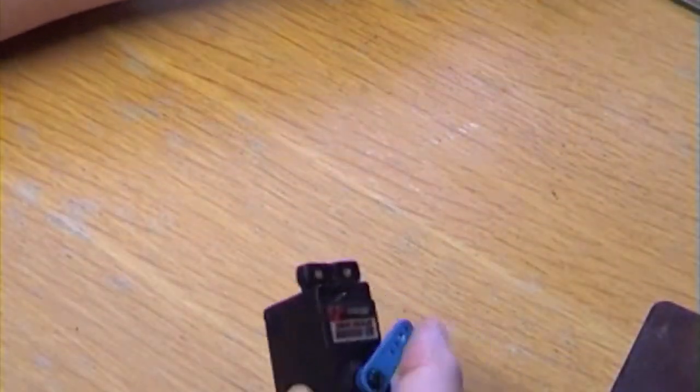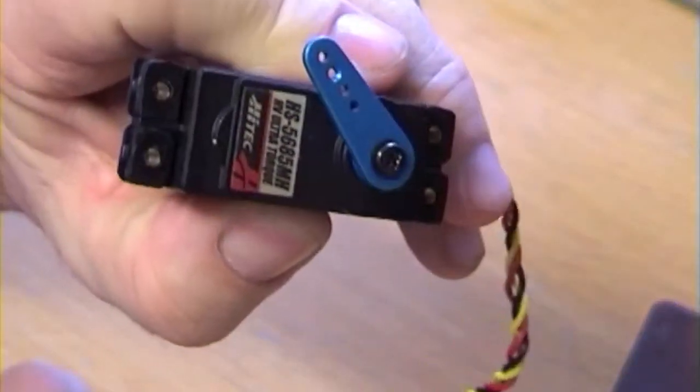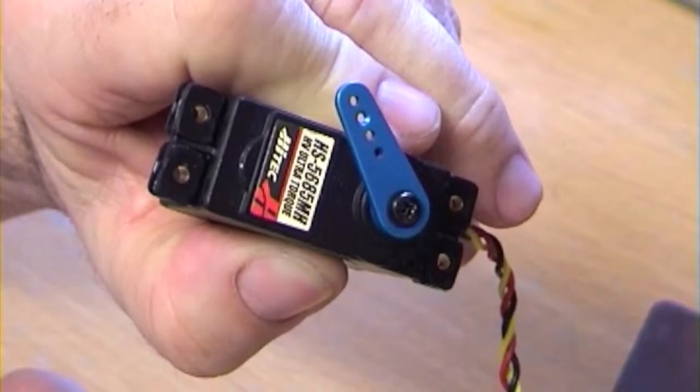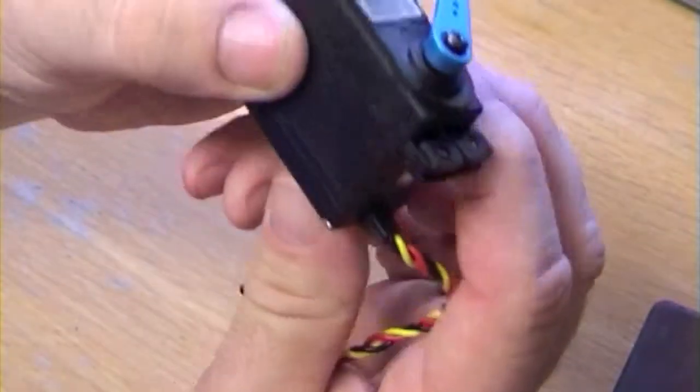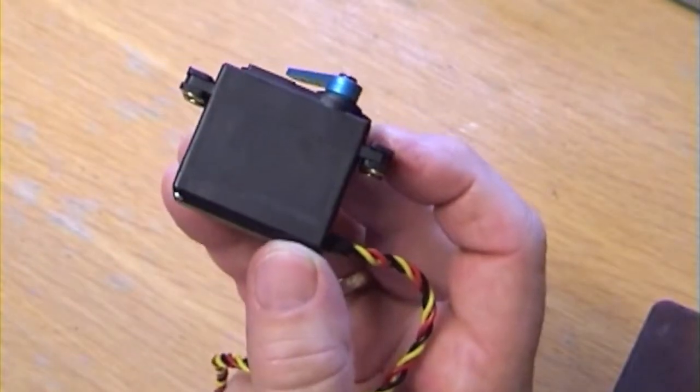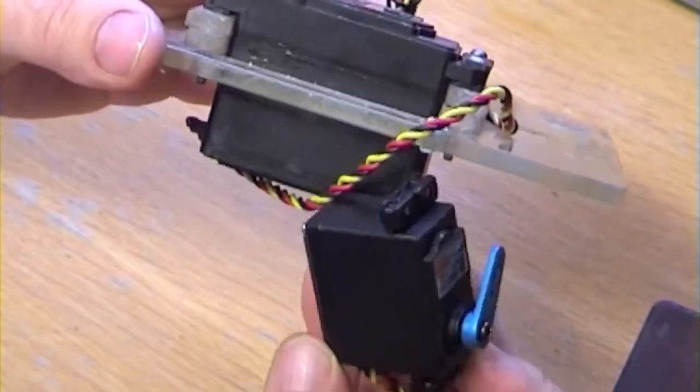Oh, by the way, my servo's here. That arrived today, funny enough on my birthday. There's a little birthday present - the servo to run the steering. And the old one from the old boat is there. Look at that monster, huge isn't it.